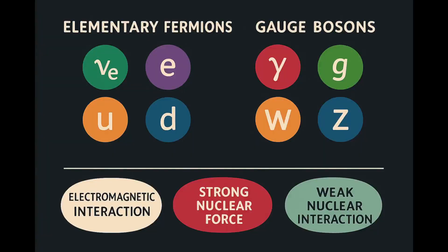The luminous matter in the universe is constituted of elementary fermion particles of spin one-half, namely leptons and quarks. These particles interact via elementary boson particles of spin one, the gauge vector bosons, which mediate the three fundamental interactions of nature: the electromagnetic interaction, the strong nuclear force, and the weak nuclear interaction.